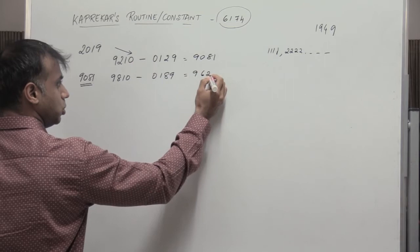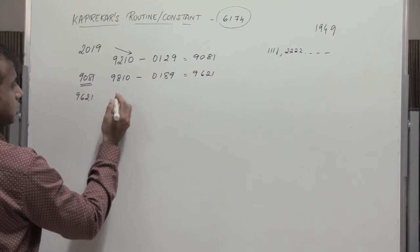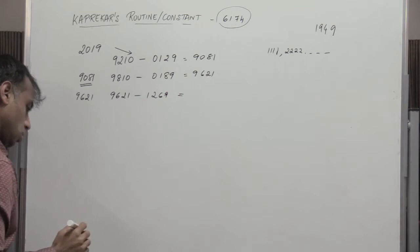So again 9621 is taken. Write the numbers in the descending order. So 9621 minus 1269. So we get 8352.